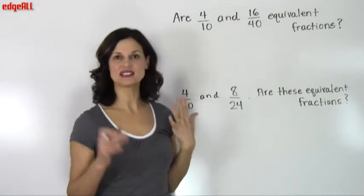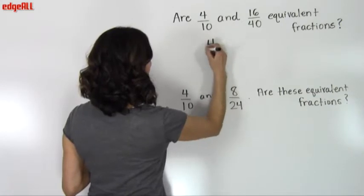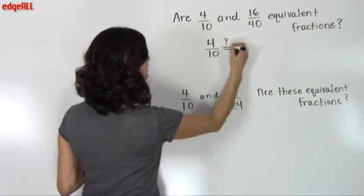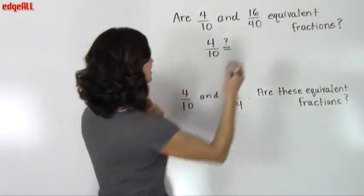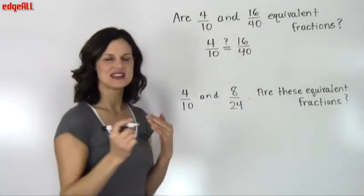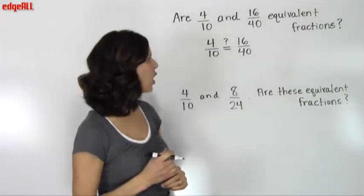We're going to start by lining up our two fractions. So I'll write 4 over 10 here, and I'll put an equal sign with a question mark over it because we don't know for sure yet if they're equivalent or not. And then I'll put my second fraction right next to it so that I make sure that I keep my cross multiplication organized.